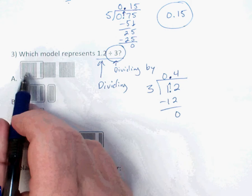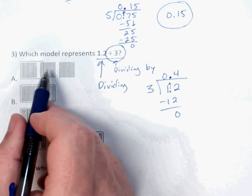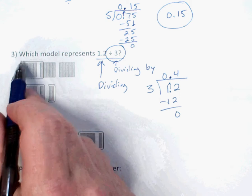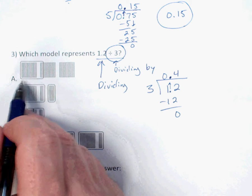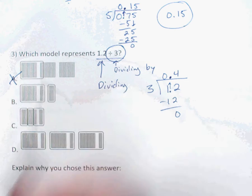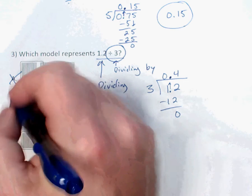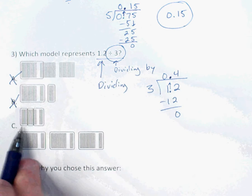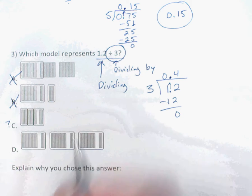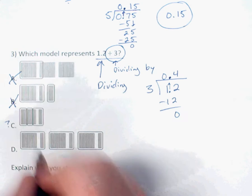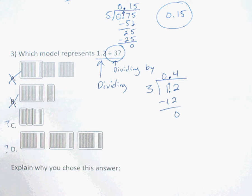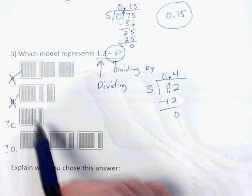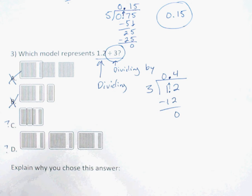Looking at answer choice A: it looks like three holes but the box is just one — that's not dividing by three. Answer B has two boxes — that won't work. C has three boxes, so maybe. D also has three boxes, so maybe. Just by looking at what I'm dividing by, I've already eliminated half the answer choices, leaving only C and D.